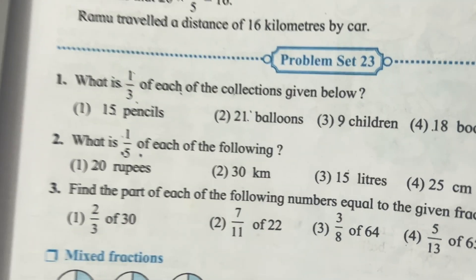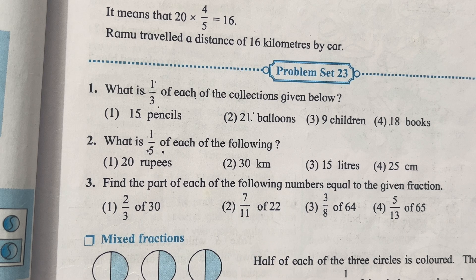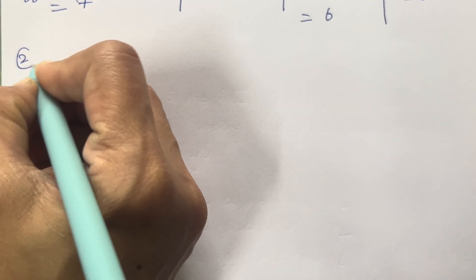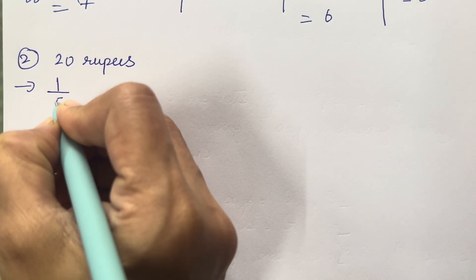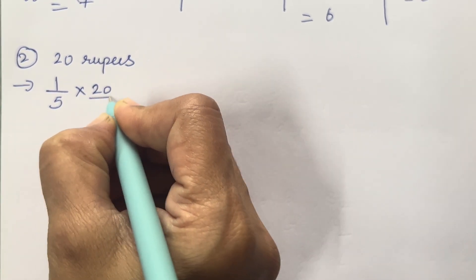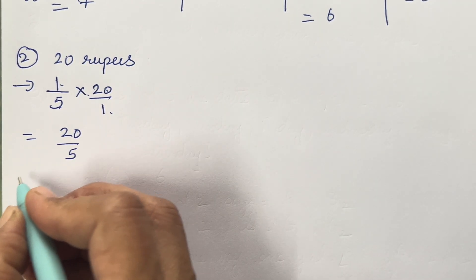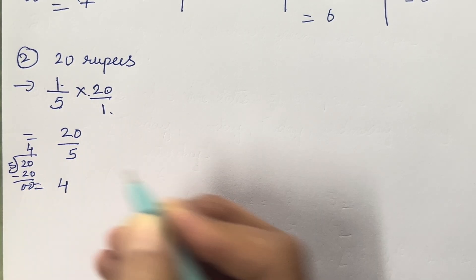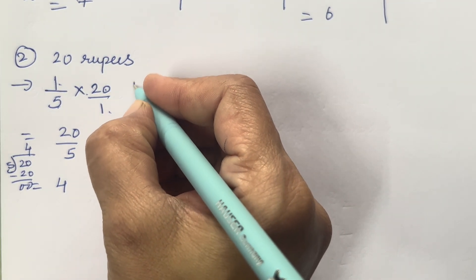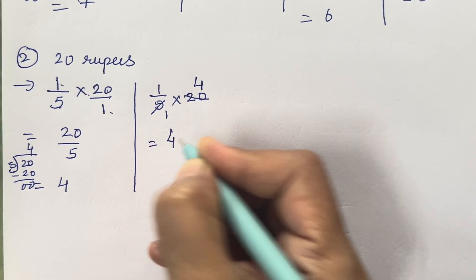Now let's move on to the next question: what is 1/5 of each of the following? Same method, only the numbers are different. First: 20 rupees. So 1/5 into 20 — 1 into 20 is 20, 5 into 1 is 5. Divide 20 by 5: 5 fours are 20, so your answer is 4. Using the shortcut: 5 ones are 5, 5 fours are 20 — answer is 4.